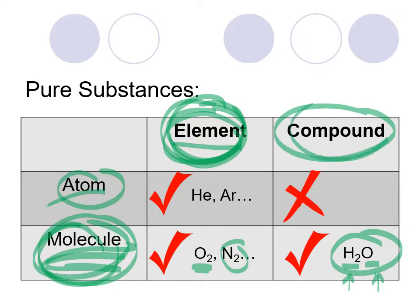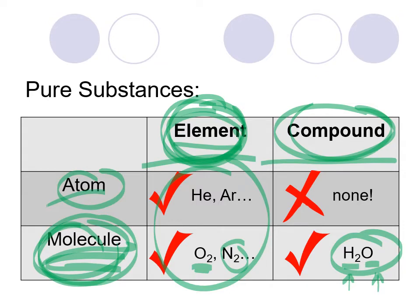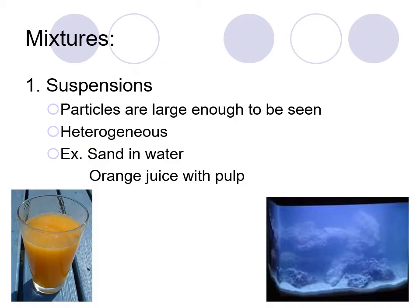If you were to try to make a compound out of only one type of atom, that's not going to work. Pure substances can exist as compounds or as elements. On the mixtures side — the non-pure-substance side of matter — we can have suspensions, which are mixtures where you can see the particles. For example, dirty water or regular orange juice with pulp: you can see the bits of pulp, and that would be a suspension.